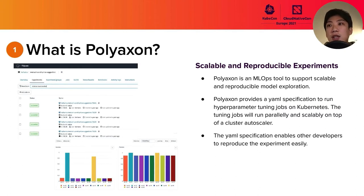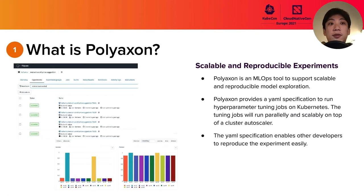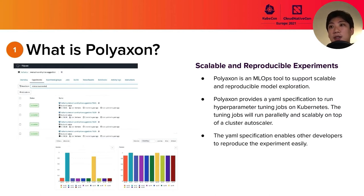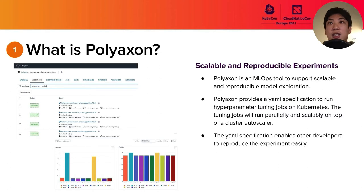PolyAxon has a UI to visualize the results of hyperparameter training jobs. As you can see in the image on this slide, we can see what parameters were the best as one metric. The PolyAxon file has all the information to reproduce that experiment, so other engineers can easily reproduce it and take over a project easily. That's a big benefit of PolyAxon.